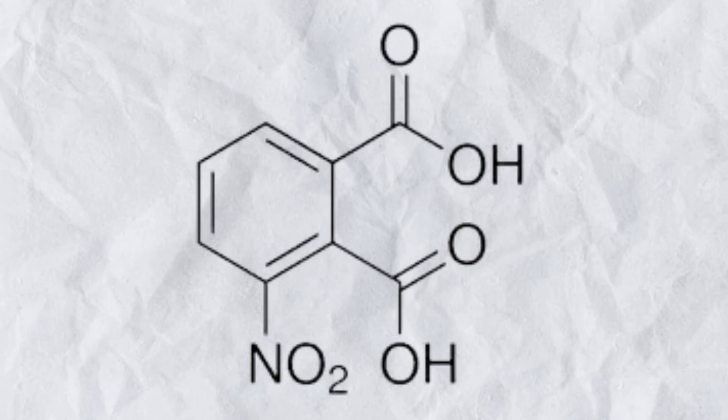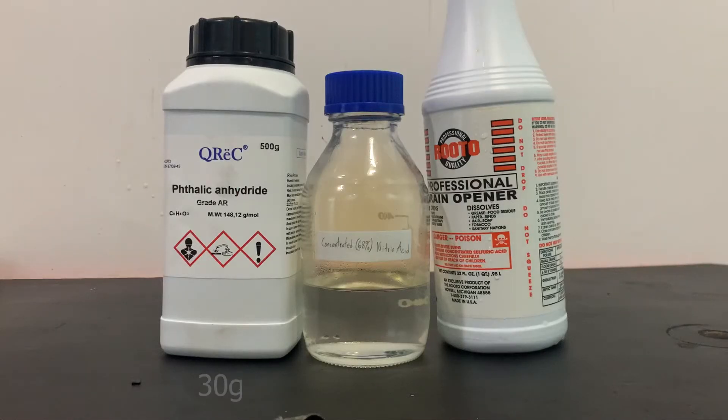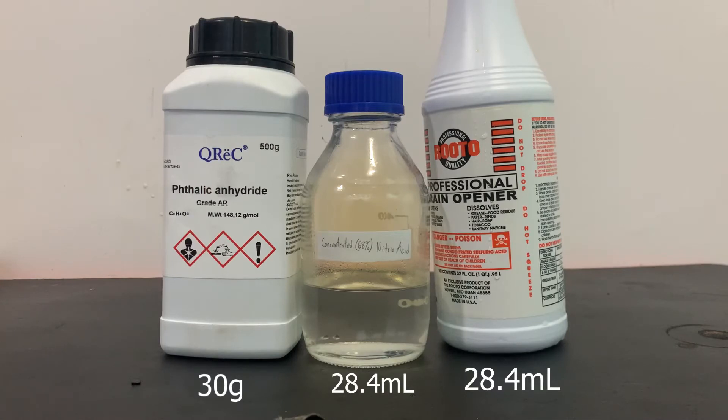For today's video, I will be making 3-nitrophthalic acid for my synthesis of luminol. For the chemicals needed, we will need 30 grams of phthalic anhydride and 28.4 milliliters of both concentrated nitric and sulfuric acid.